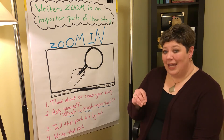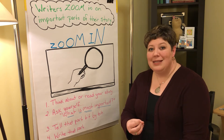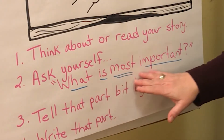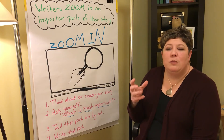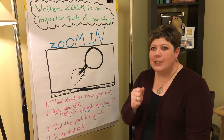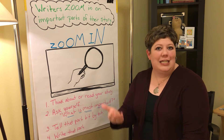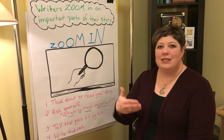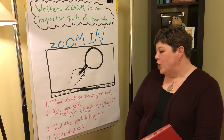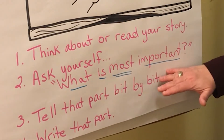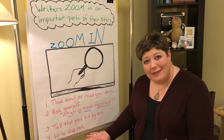When you're thinking about this, you want to maybe reread your piece or reread a part of your piece and decide which part is most important — which part is going to be really essential. That means which part might the reader really need to focus in on so they get the idea of what characters are like, or if the setting is changing, or if the character is starting to learn something. You want to zoom in on that most important part and then tell that part bit by bit.